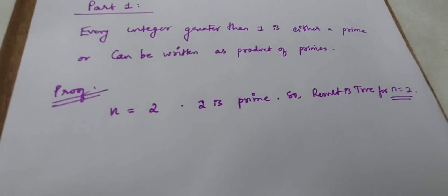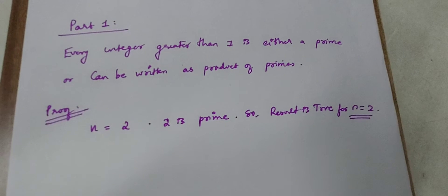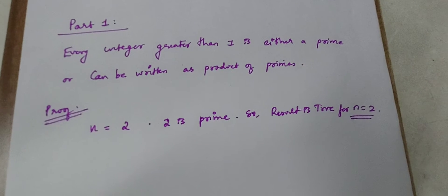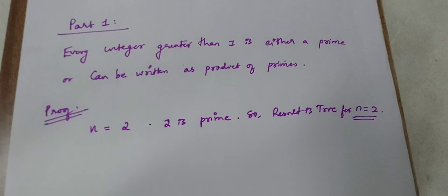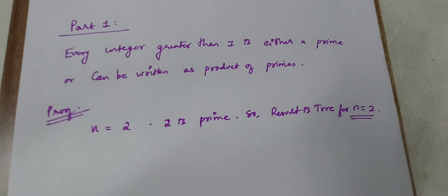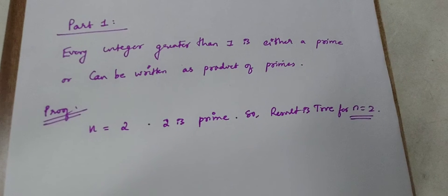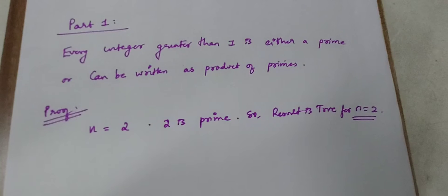Let's start with the number 2. 2 is the first integer greater than 1, and 2 is a prime number. So our statement is valid for number 2. For n equal to 2, which is the base case, the statement holds.